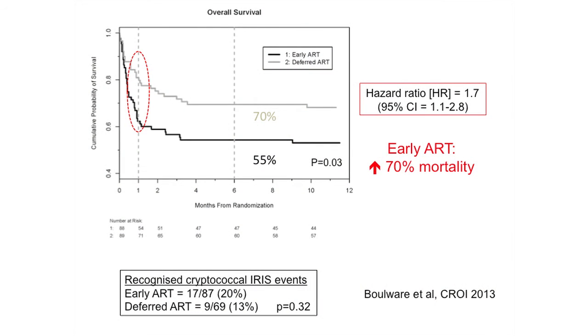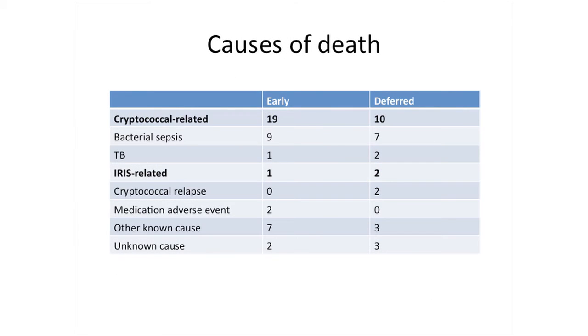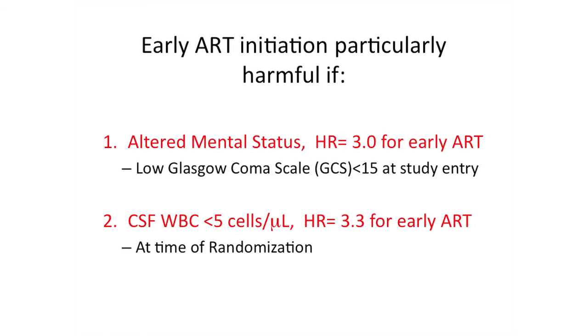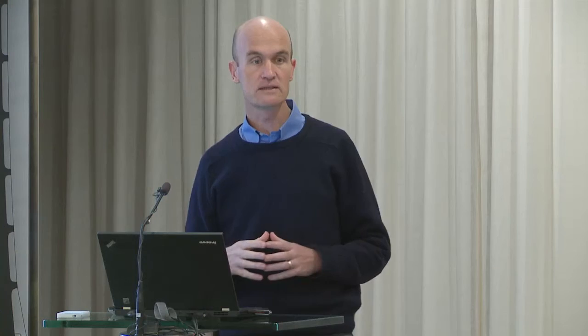The curves diverged early, and that's what drove the increased mortality — deaths within the first month of antiretroviral therapy in the early arm. The two most common causes of death were cryptococcal-related and bacterial sepsis, and the difference between the two arms was really in cryptococcal-related mortality. Early ART was particularly harmful in those with depressed level of consciousness at baseline and those with a white cell count less than five in the CSF, suggesting less inflammation at presentation. Those predefined strata were associated with a higher hazard ratio for mortality than in the general study population.